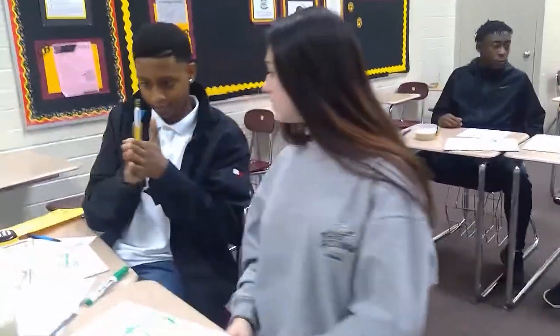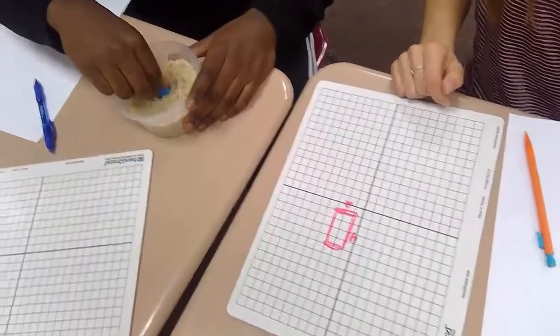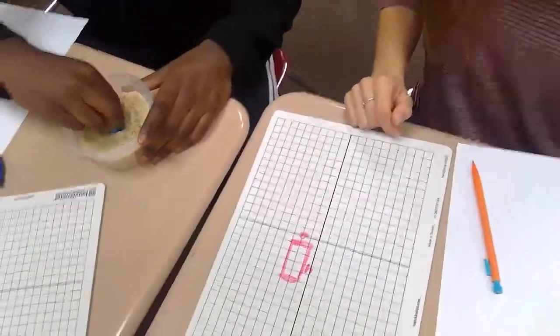In high school geometry, the expectation is for students to both explain volume formulas and use them to solve problems. This expectation is built on a foundation of student spatial understanding of the relationship between two-dimensional and three-dimensional objects.